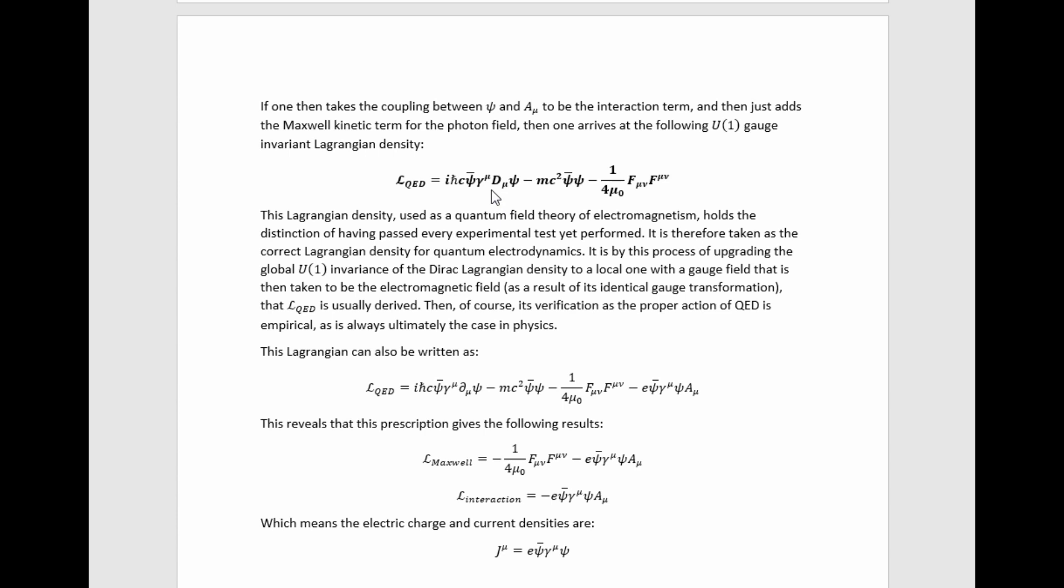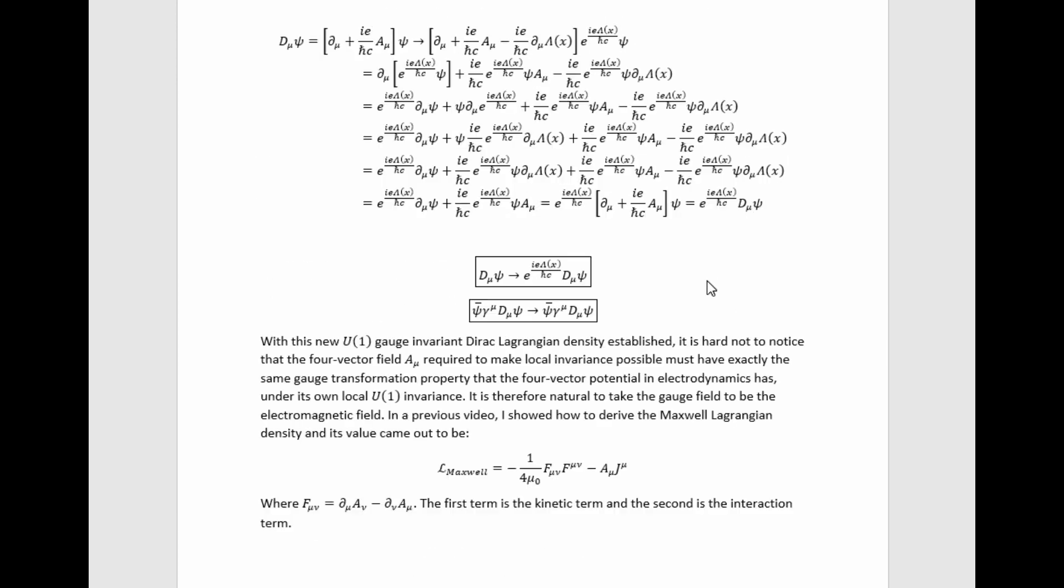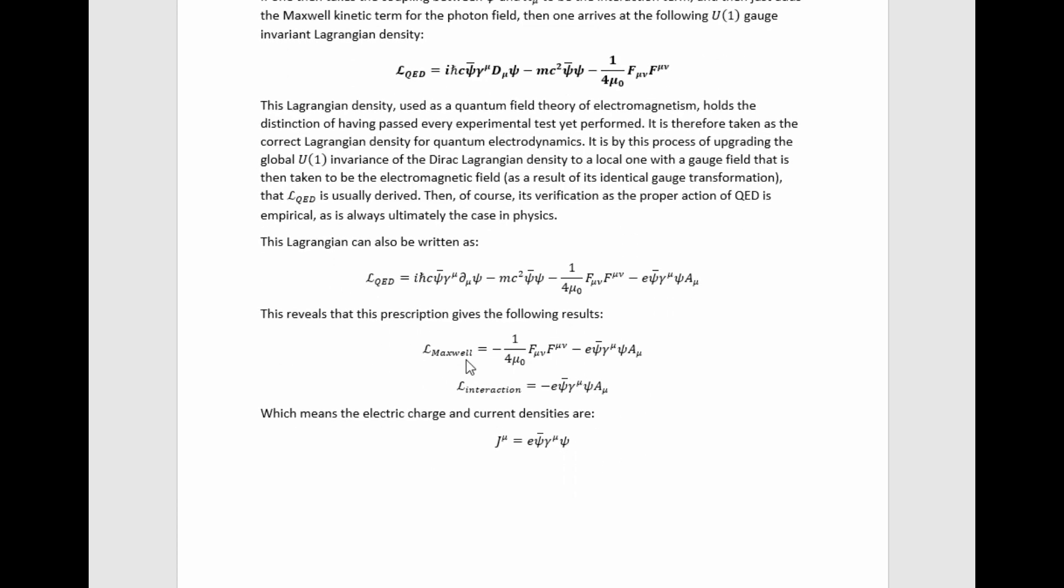If we plug in the value for the covariant derivative d mu and then expand out the Lagrangian density, we find this form for it. We identify the Dirac Lagrangian right here, and then we see what appears to be the Maxwell Lagrangian here if we do as we said and we take the coupling term to be the interaction term shown here. So that gives us that L Maxwell for the quantum electrodynamics case just has this value. The interaction Lagrangian just has this value, and that's consistent with the original, more general version of the Maxwell Lagrangian that was given above if we take the current, the forecurrent density, to have this value in terms of Dirac spinners.